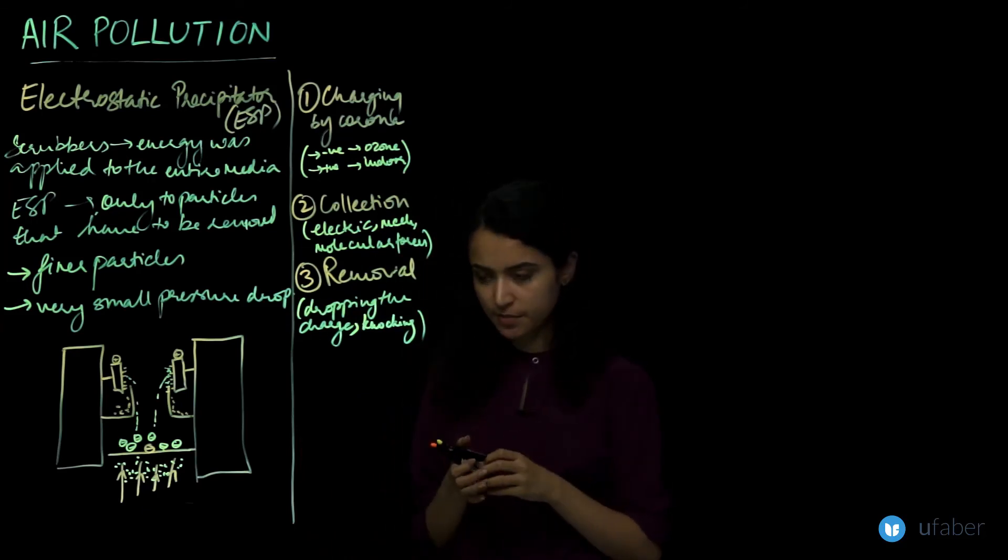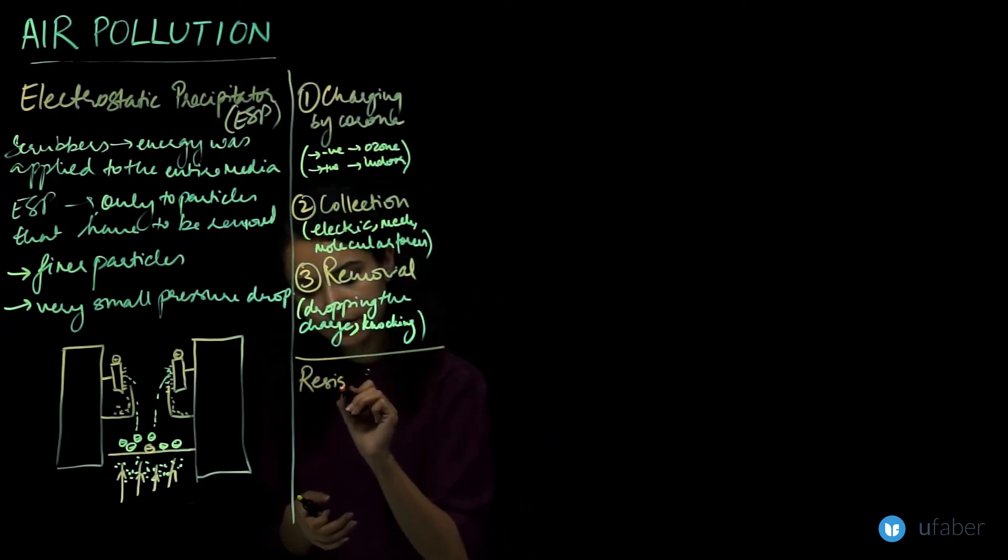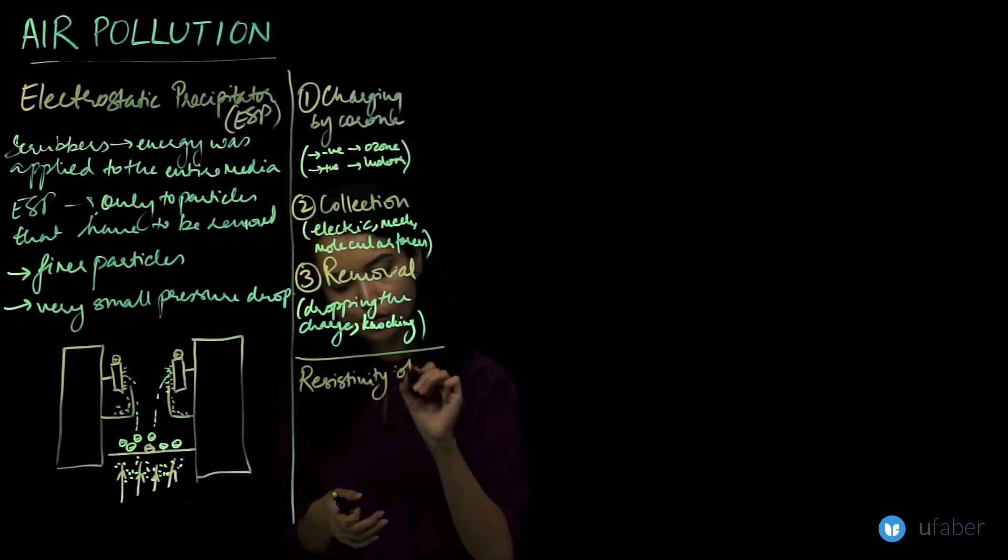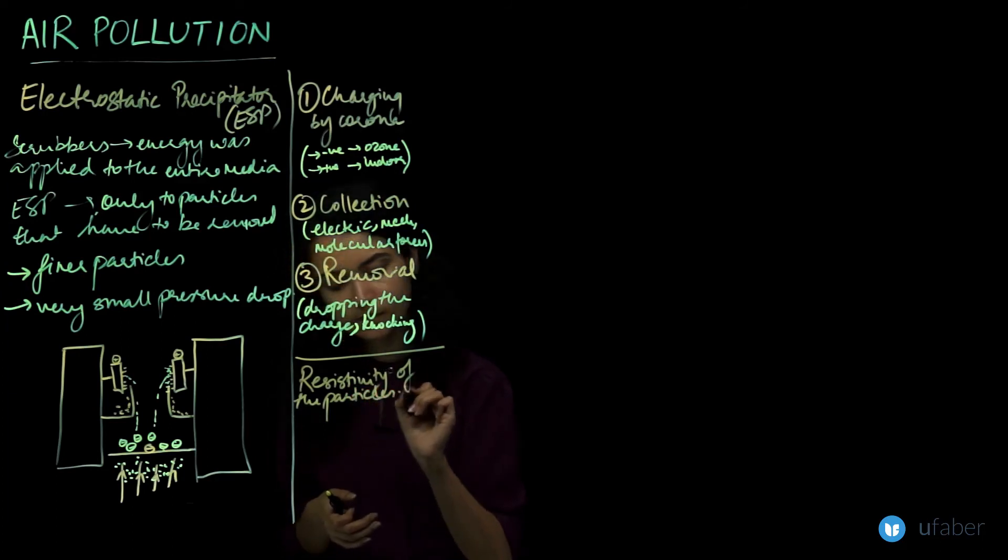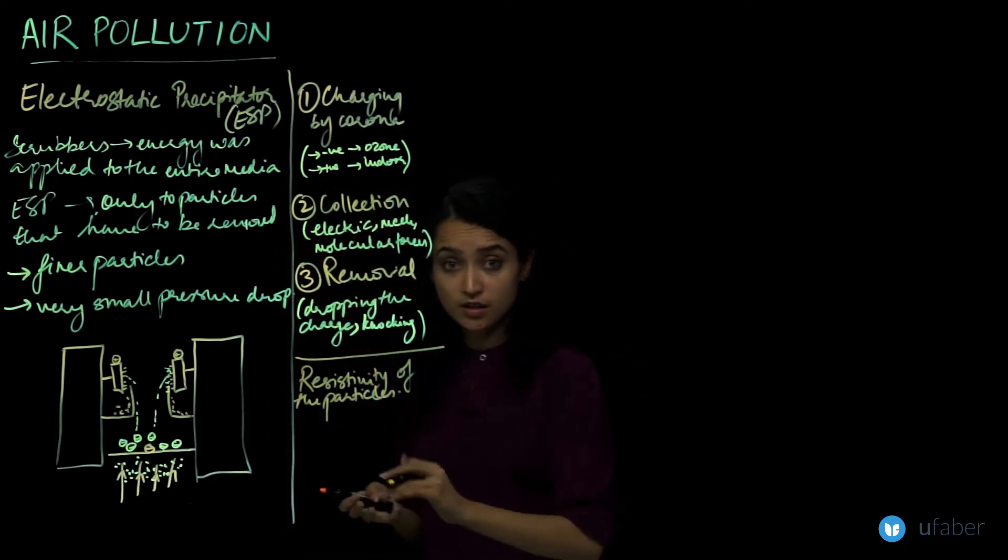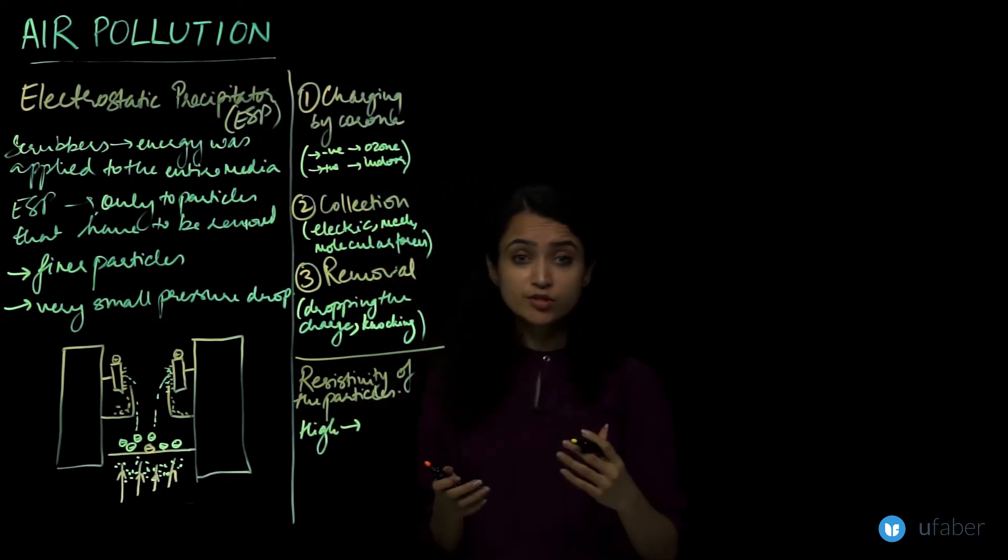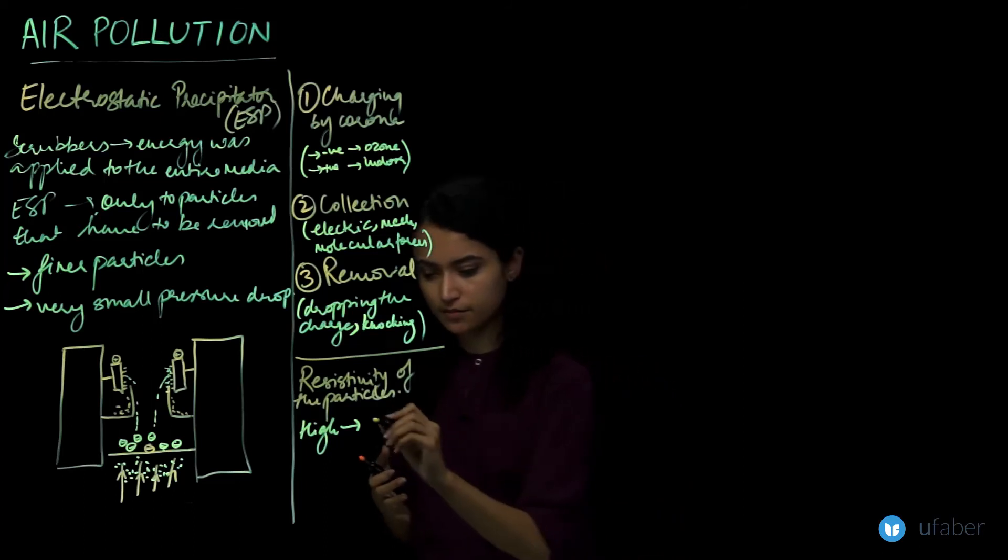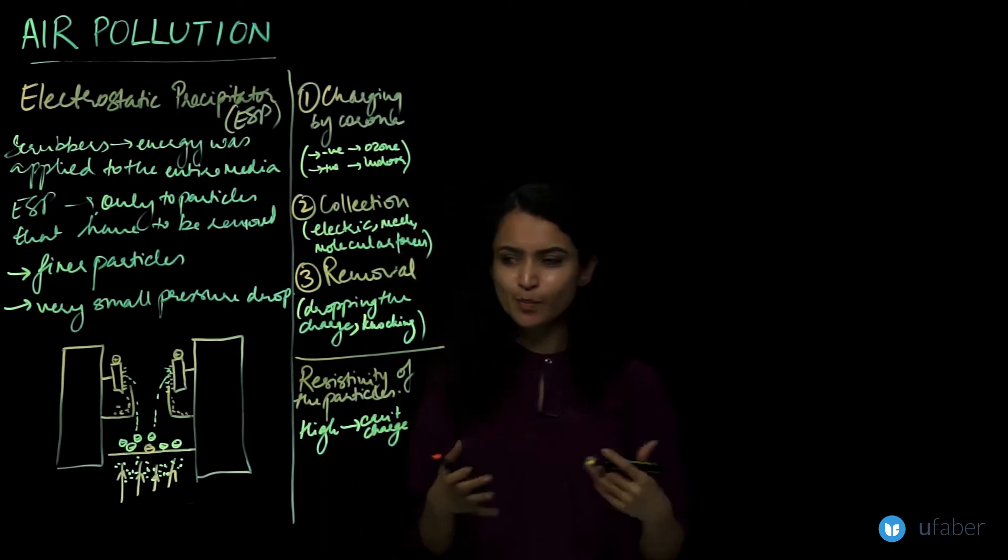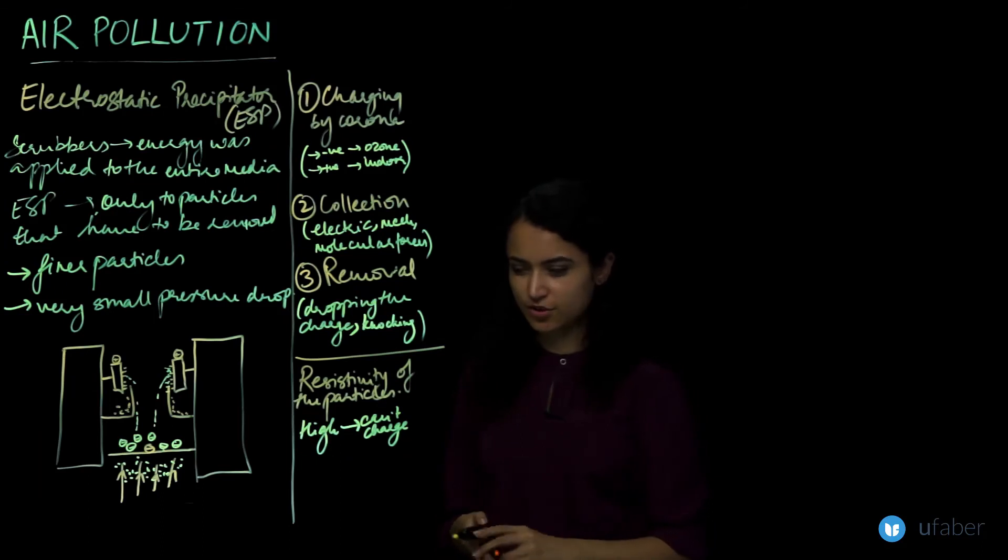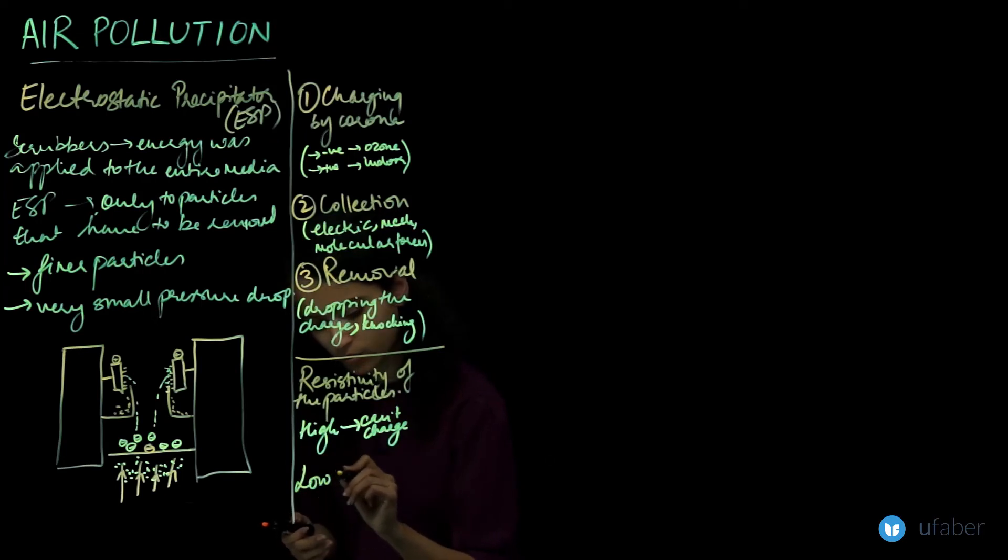An important criteria before deciding to use an electrostatic precipitator is the resistivity of the particles. If the resistivity is too high, it would just mean that the particles cannot get charged so easily.